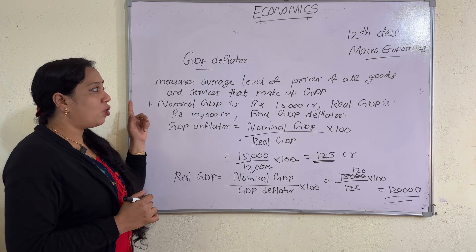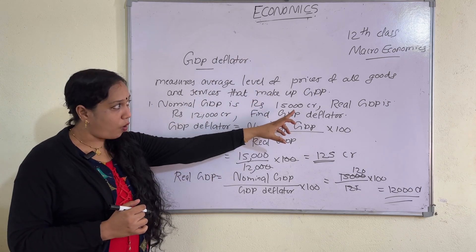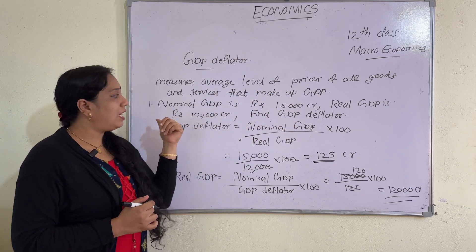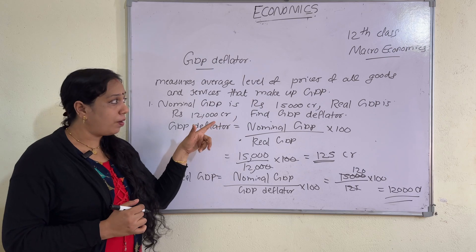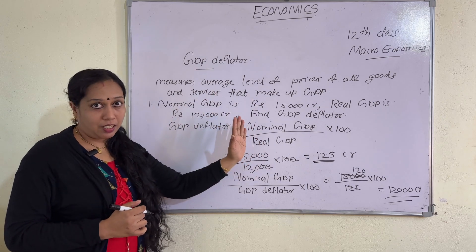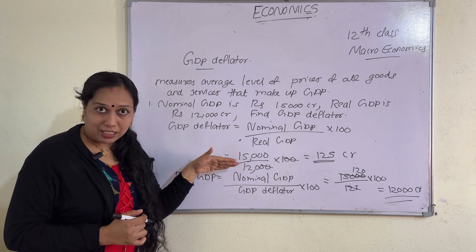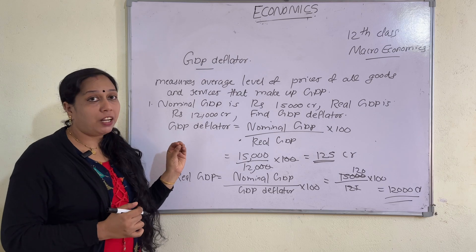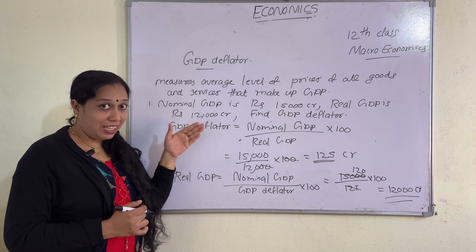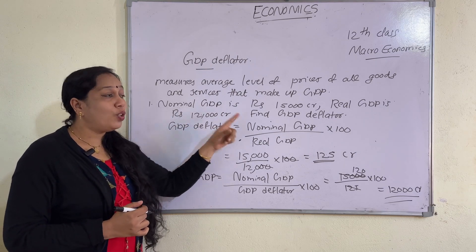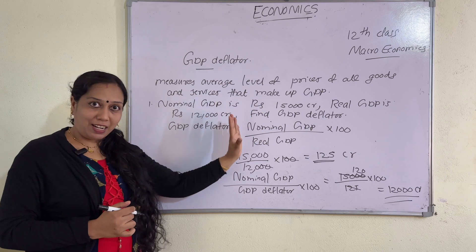Here the question is: nominal GDP is 15,000 crore, real GDP is 12,000 crore — find the GDP deflator. First, write the formula. The GDP deflator is equal to nominal GDP divided by real GDP, multiplied by 100.